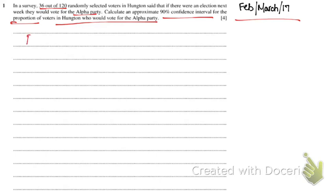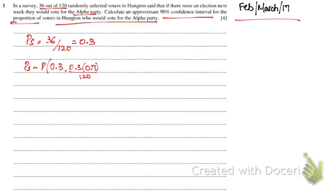First, we know that the sample proportion PS is 36 over 120, which is 0.3. PS follows a distribution with mean 0.3 and variance P(1−P)/n, which is 0.3 × 0.7 upon 120.